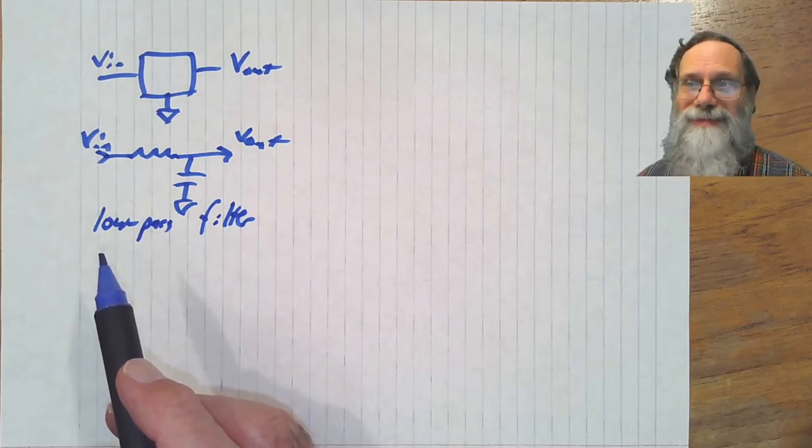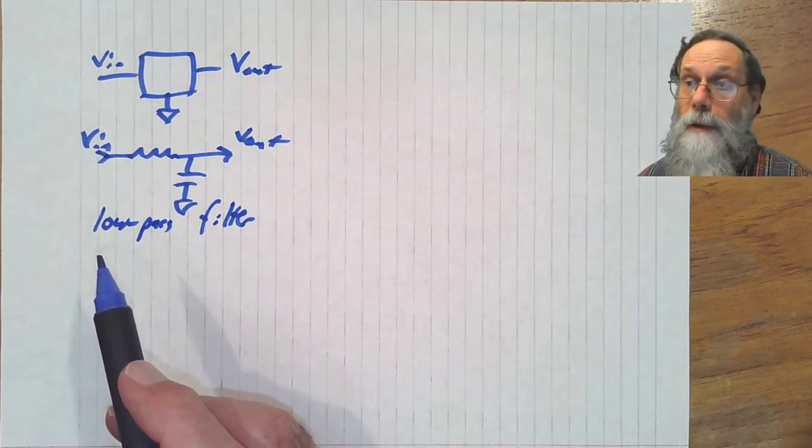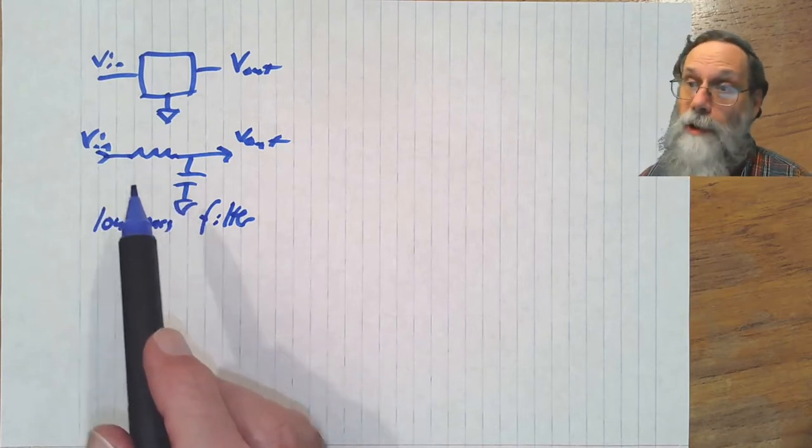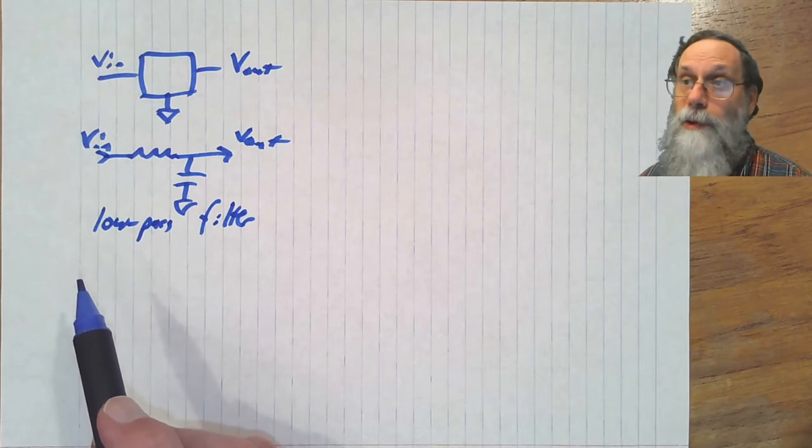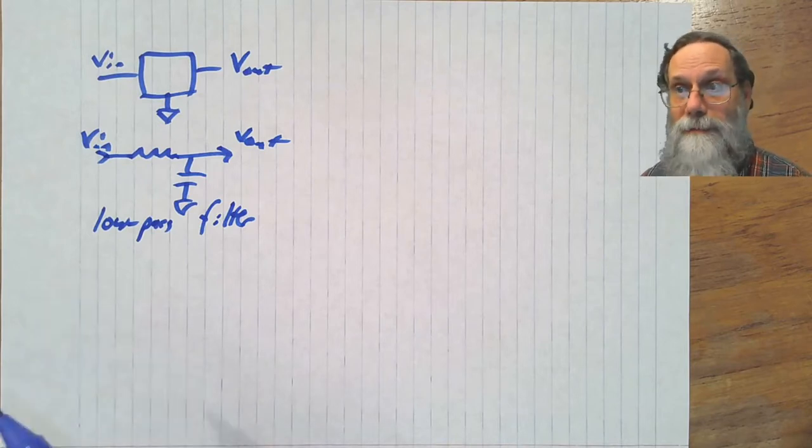All right, that's a rough intuitive idea, but it's a really good way to remember whether something's a low-pass or high-pass filter is just look at what happens at zero and at infinity, because those are easy to think about, and it'll give you an idea of what's going to have to happen in between.